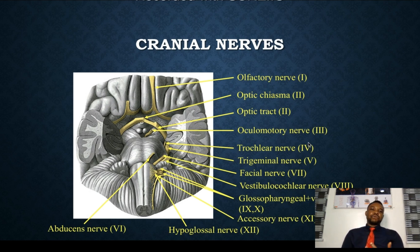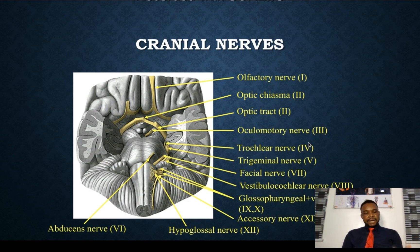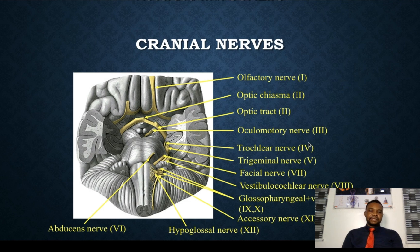To recap the 12 cranial nerves: CN I olfactory, CN II optic, CN III oculomotor, CN IV trochlear, CN V trigeminal (with components ophthalmic, maxillary, and mandibular), CN VI abducent, CN VII facial, CN VIII vestibulocochlear, CN IX glossopharyngeal, CN X vagus, CN XI accessory, and CN XII hypoglossal. Details of these nerves will be covered in subsequent videos.